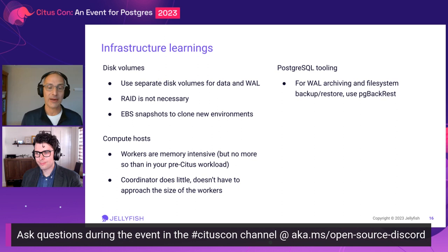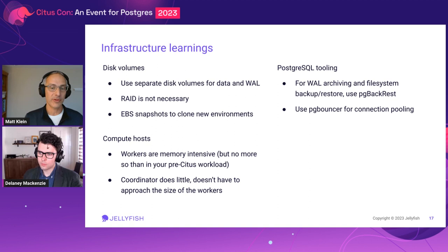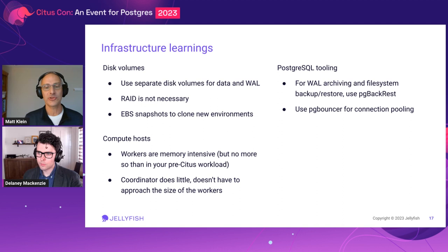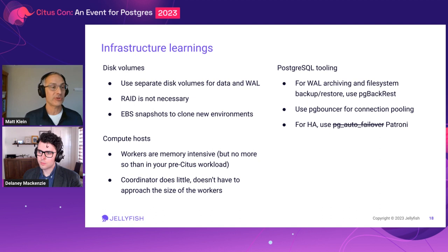Our strong recommendation is to use PG Backrest instead — they've fixed that problem with asynchronous archiving. Setting up connection pooling with PG Bouncer is essential; this was probably what tripped us up most on the infrastructure side. We ended up doing this both for connections into the coordinator, but also for connections between the coordinator and the worker nodes. We had occasions where spikes in traffic would lead to the operating system not being able to establish sockets quickly enough within the Citus cluster, causing the coordinator to error out. For high availability, we went with PG Auto Failover, and recent news is that Patroni is the newer recommendation and now fully supports Citus.